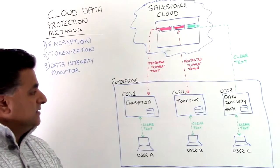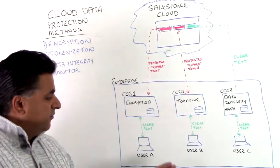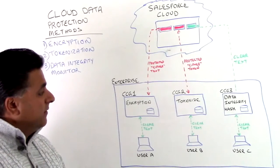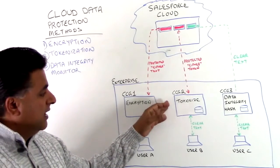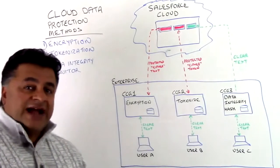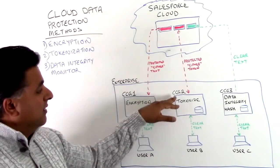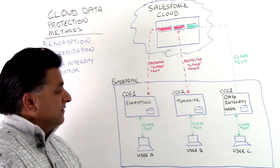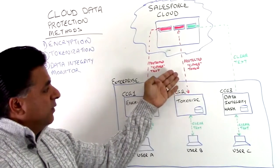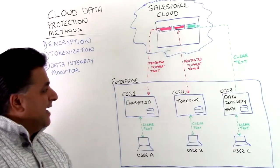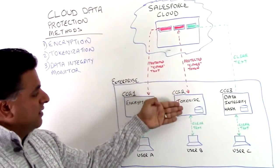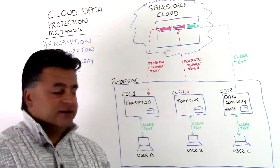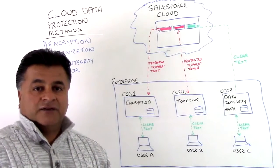Now let's talk about the second method, which we call tokenization. User B can enter their information using the same browser and access the Salesforce Cloud. As they hit Cypher Cloud gateway number two, that information is actually tokenized. The data never actually leaves the enterprise premise, but a token — a reference to that actual data set within the enterprise — makes its way into the Salesforce Cloud. We call it a Cypher token. When the user accesses that information, the protected token comes back into the Cypher Cloud gateway where it gets detokenized, and a clear version of that data is represented in the browser.